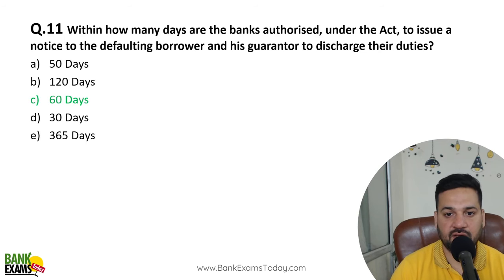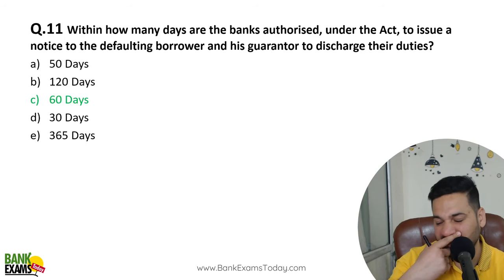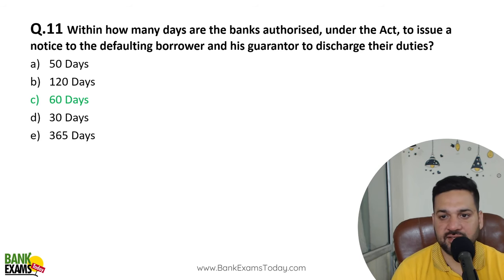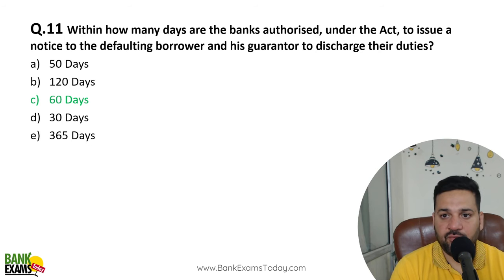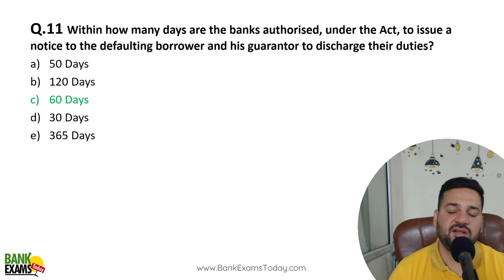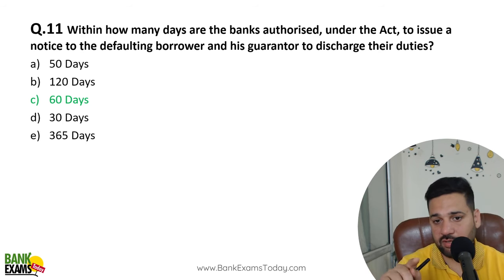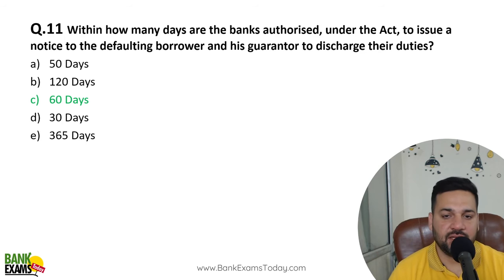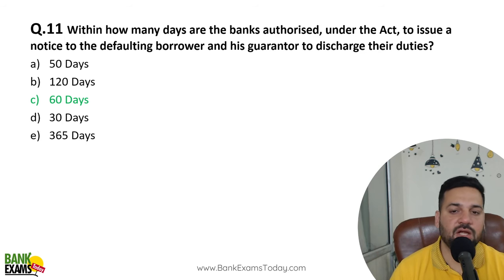Within how many days are banks authorized under the Act to issue notice to the defaulting borrowers and guarantors to discharge their duties? 60 days. If a borrower has defaulted, the borrower gets 60 days. This question has been repeated before with different language. After 60 days' time is given to the borrower, the banks can then take their action.